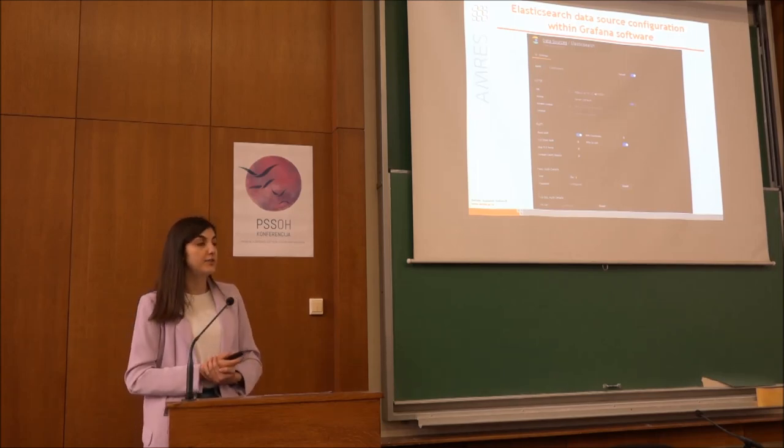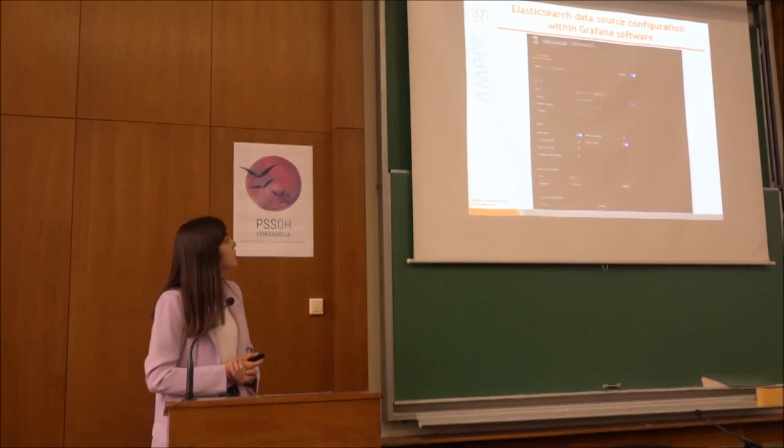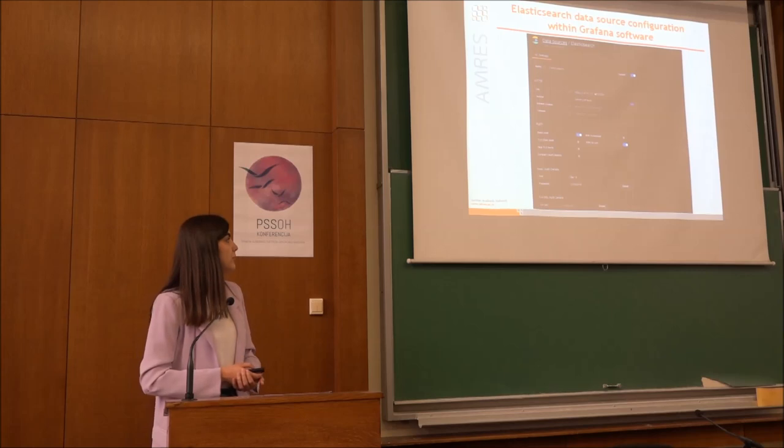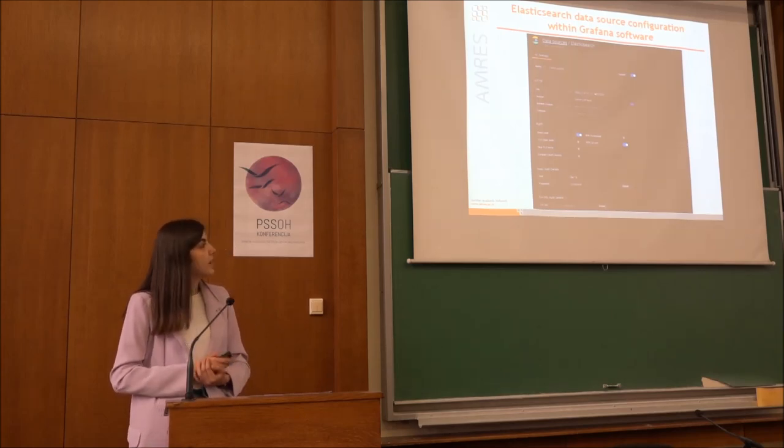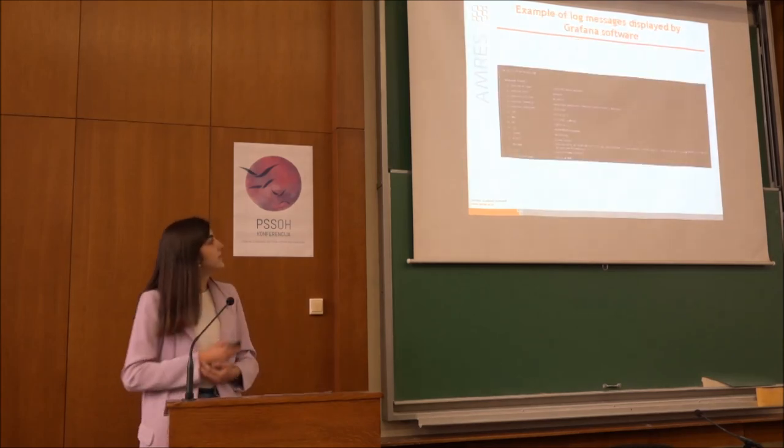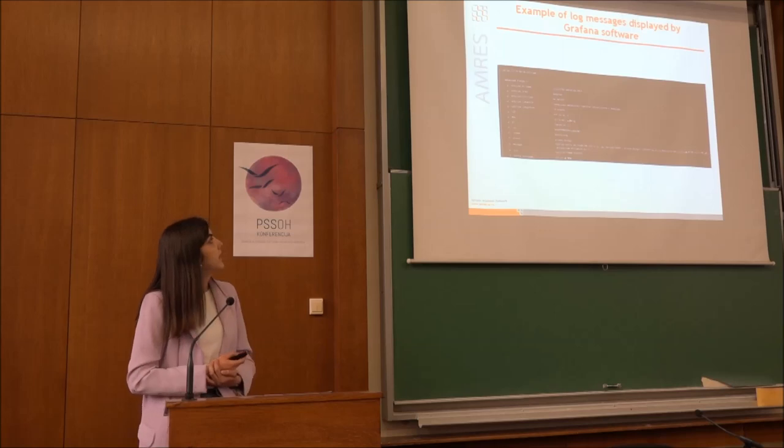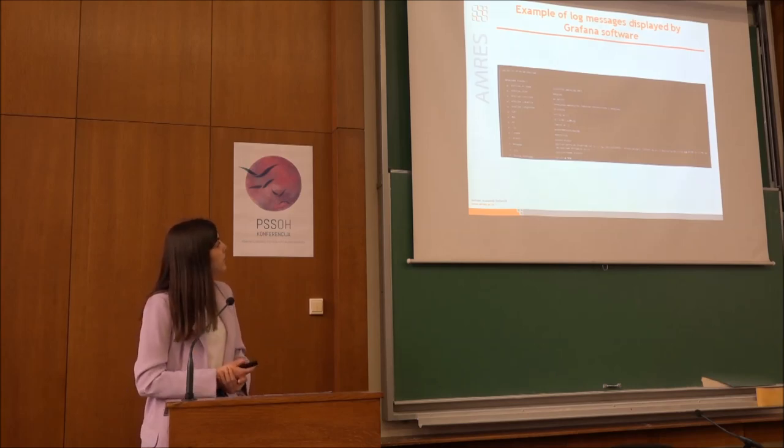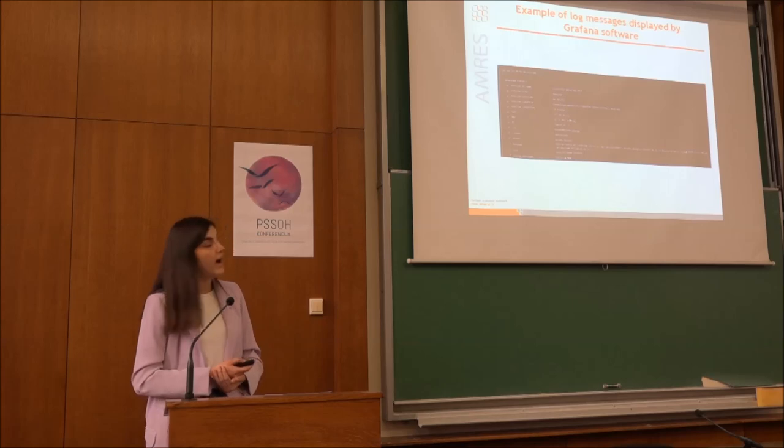And we are now to the visualization part. Here I wanted to show you the Grafana data source plugin for the Elasticsearch. You need to here put some URL and if you have basic identification details and also if you are using CA certificate you must copy from your server and put it here. And this is how the log looks displayed by Grafana software. As you can see it's maybe the same one as I showed you in previous slide in the Logstash but have some maybe a few new values like ID, index and so on.